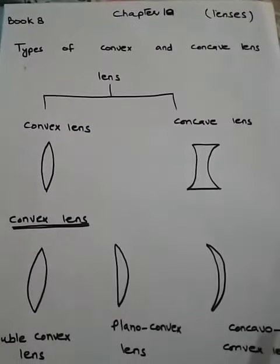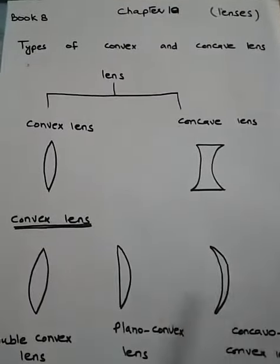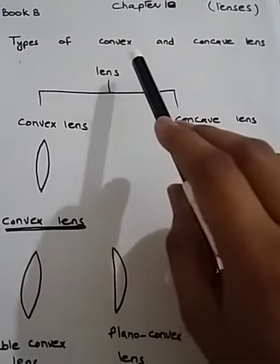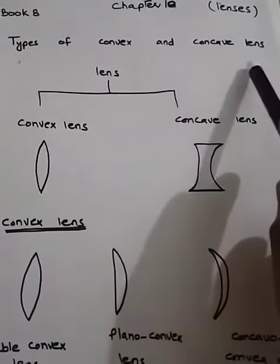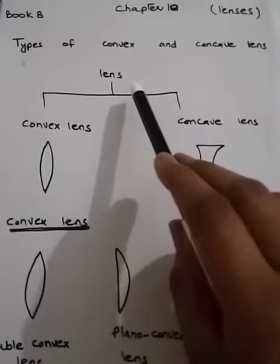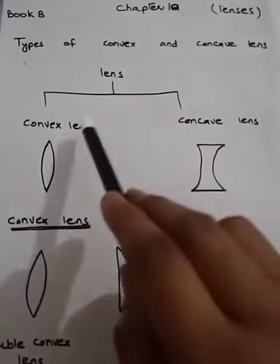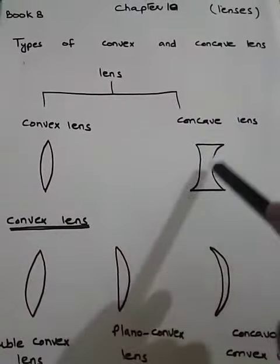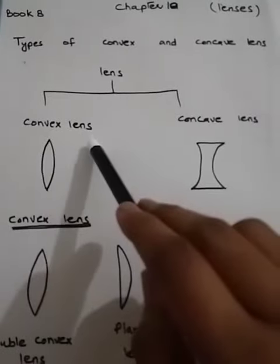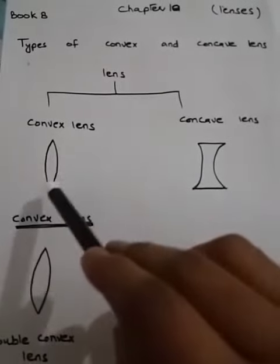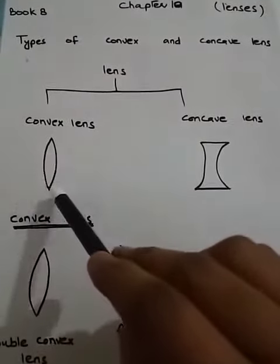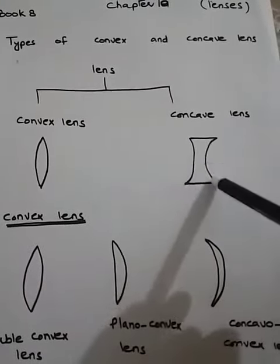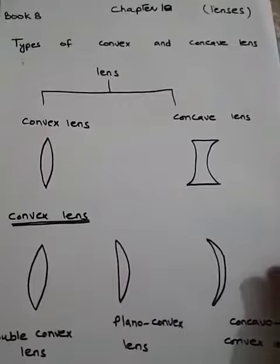Hello students, today I am going to discuss the lenses chapter with you, and the topic is types of convex and concave lenses. We already discussed lenses and its two different types: convex lens and concave lens. Convex lens is curved outwards from both sides, and concave lens is curved inwards from both sides.